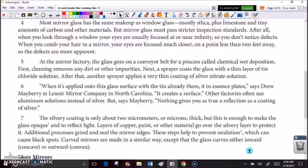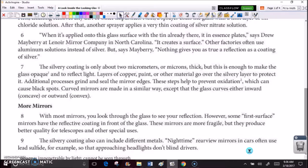When it's applied onto this glass surface with the tin already there, it in essence plates, says Drew Mayberry at Lenore Mirror Company in North Carolina. It creates a surface. Other factories often use aluminum solutions instead of silver. But, says Mayberry, nothing gives you as true a reflection as a coating of silver.